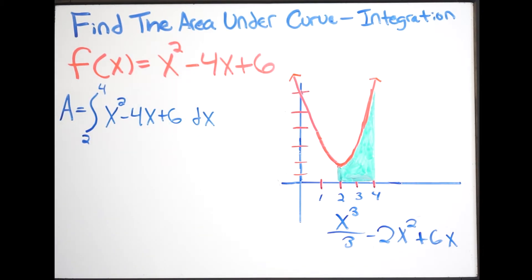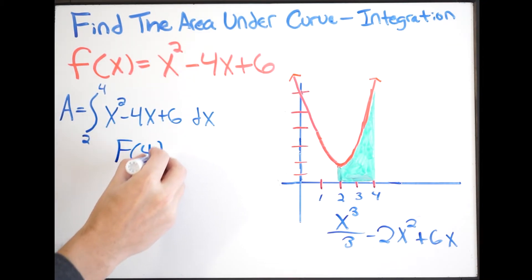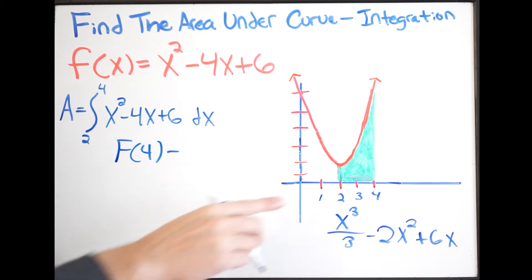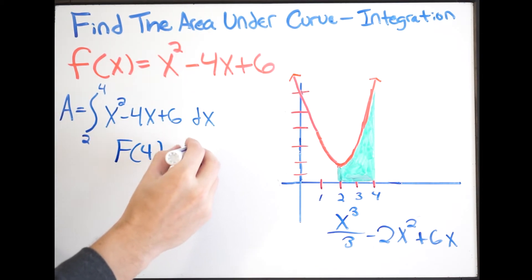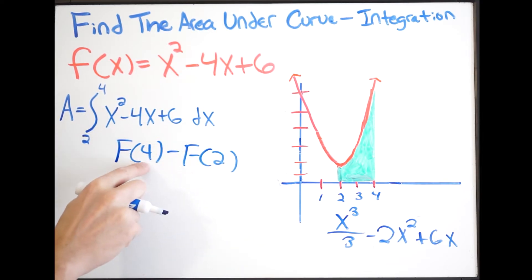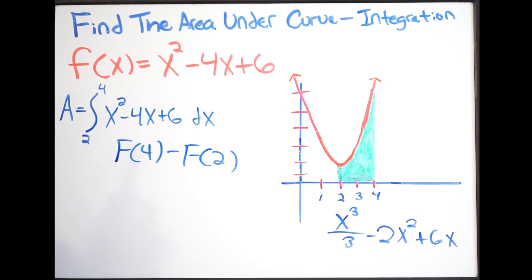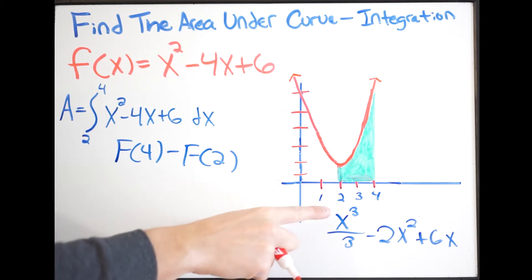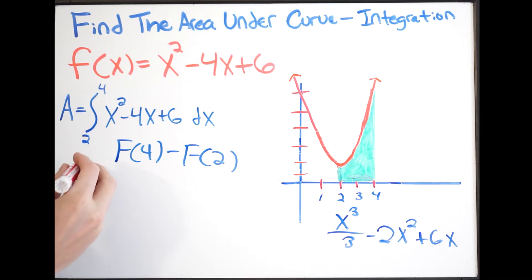To find the area under the curve, we take the anti-derivative of our function evaluated at the upper limit, 4, minus the anti-derivative evaluated at the lower limit, 2. So upper limit minus lower limit — that's how we get the area. We'll do this out by hand. First, we'll find the anti-derivative at 4, plugging 4 in for every x.